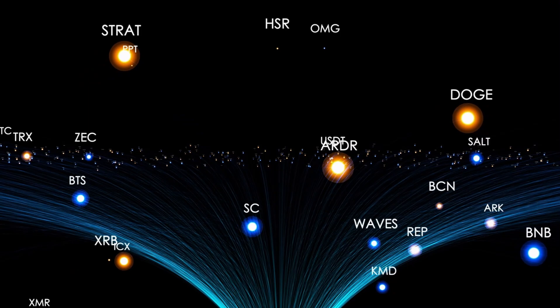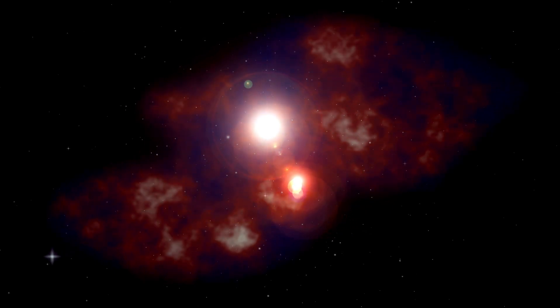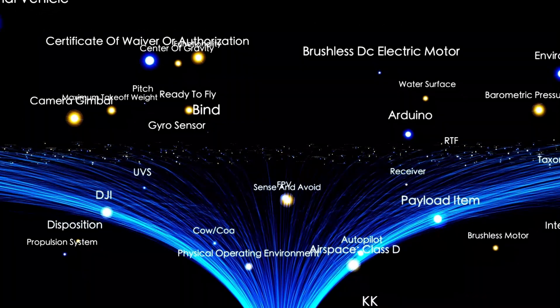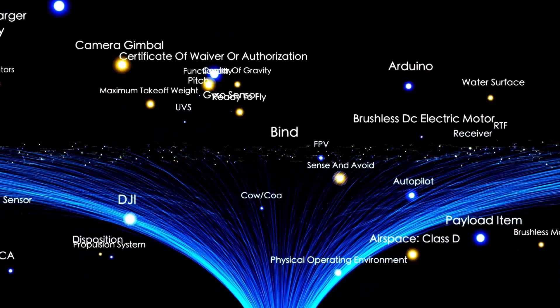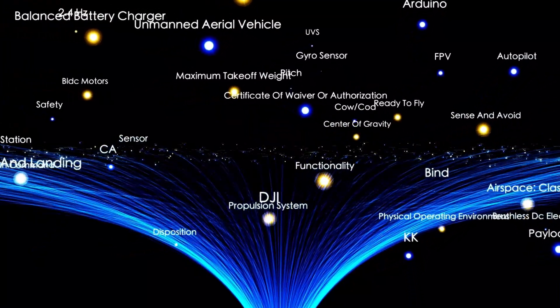The presence of star spots can also affect a star's brightness and cause it to vary over time. This is because the spots are cooler and therefore emit less light than the surrounding gas. As the star rotates, the spots move in and out of view, causing the overall brightness of the star to fluctuate.